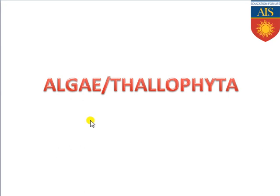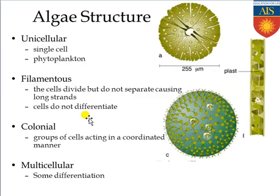When we start discussing about Algae or Thallophyta, we need to see how many types of algae are commonly found. Algae are commonly unicellular. They can be filamentous, they can be colonial, or they can be even multicellular.